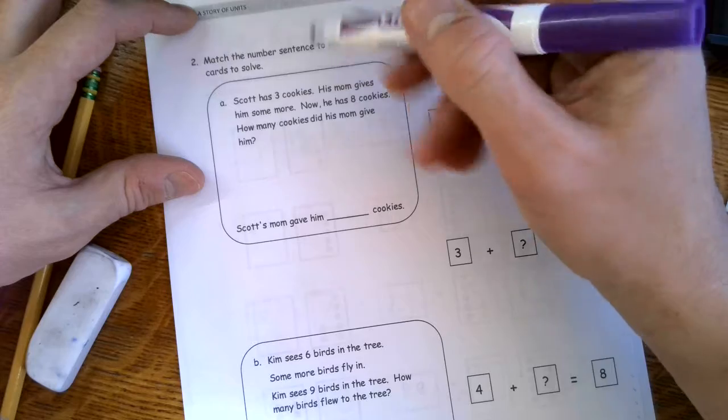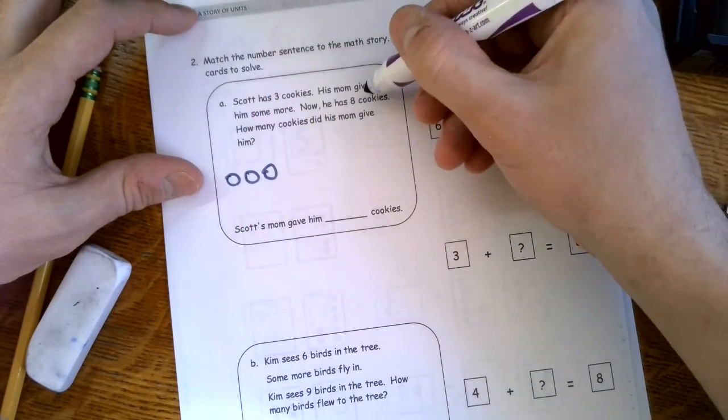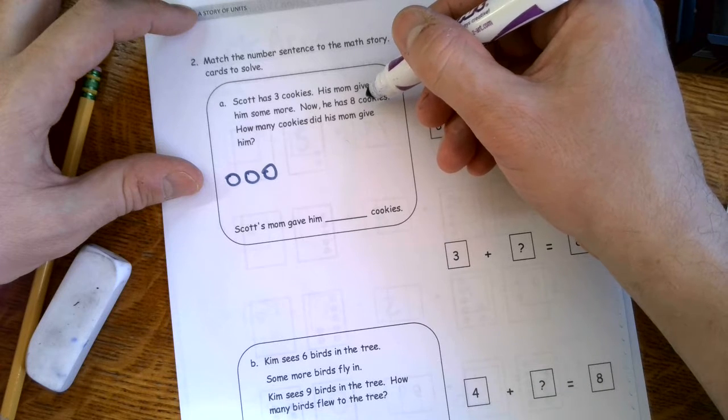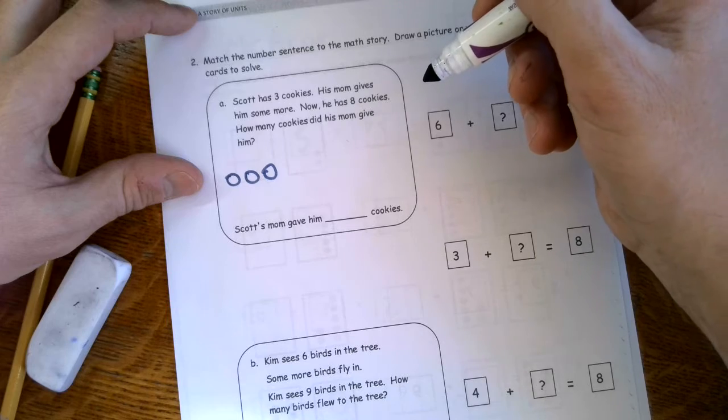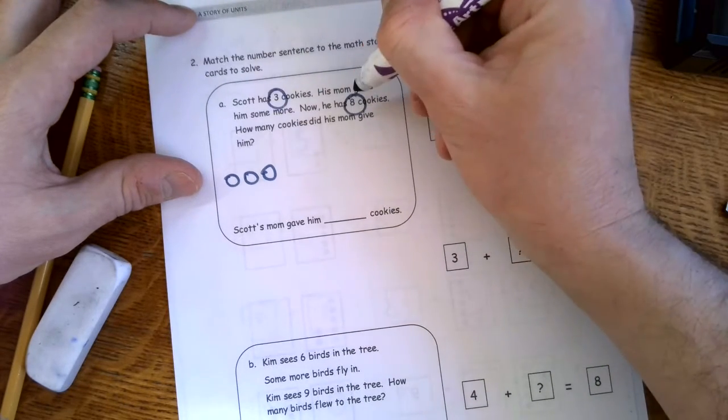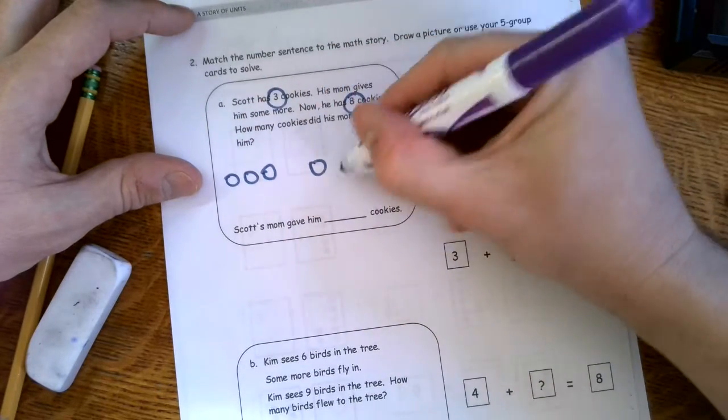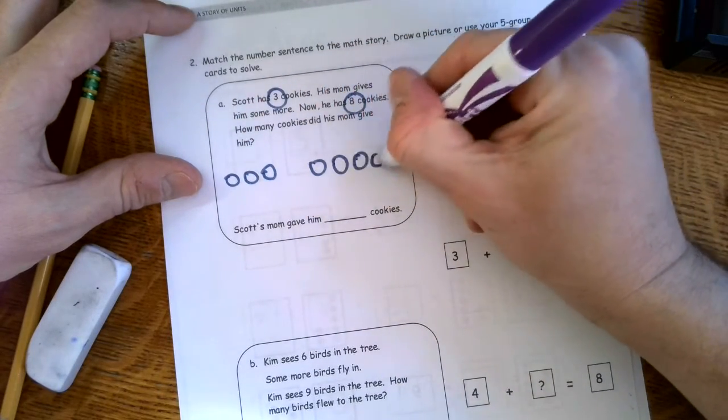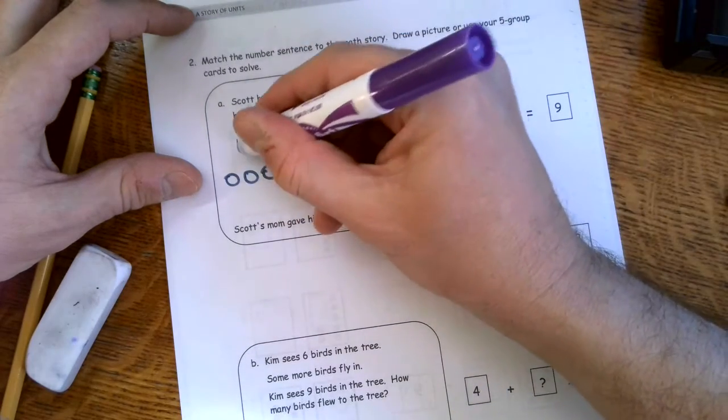So it says Scott has three cookies. We'll start there. Scott has three cookies, one, two, three. And his mom gives him some more. Now he has eight. How many cookies did his mom give him? So we're circling three and we get to eight. So we say, oh, so we have one, two, three, four, five, six, seven, eight. You know, let's see what that makes. One, two, three over here.